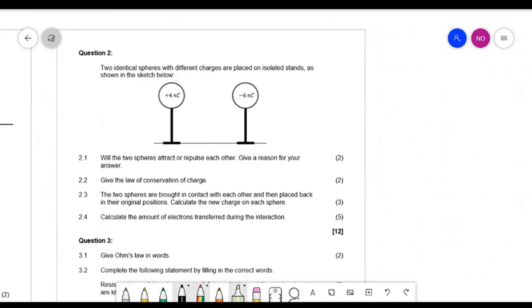Then for question 2, they say two identical spheres with different charges are placed on isolated stands as shown in the sketch. Will the two spheres attract or repel each other? Give a reason for your answer. So they will attract one another.